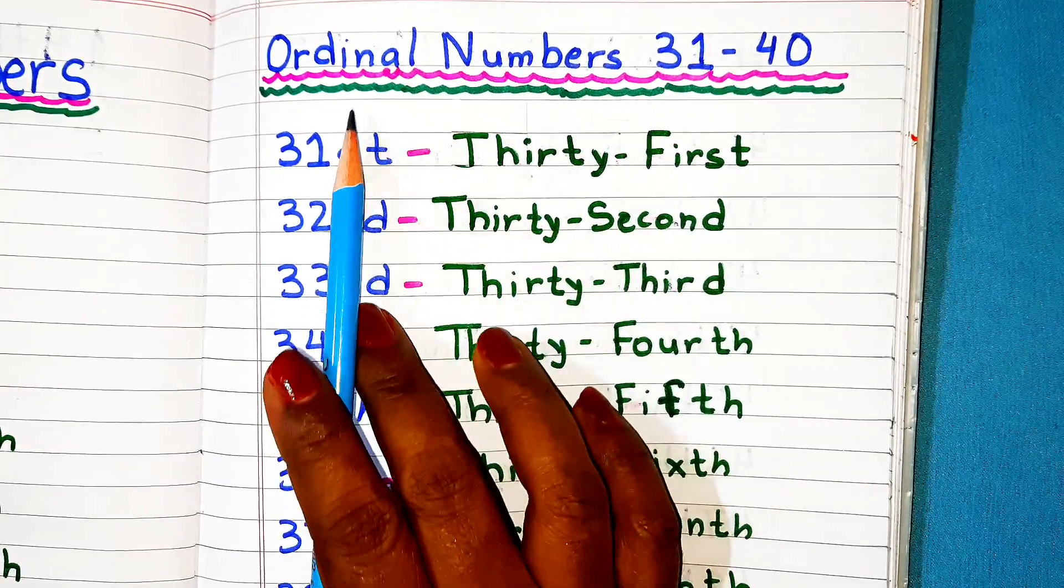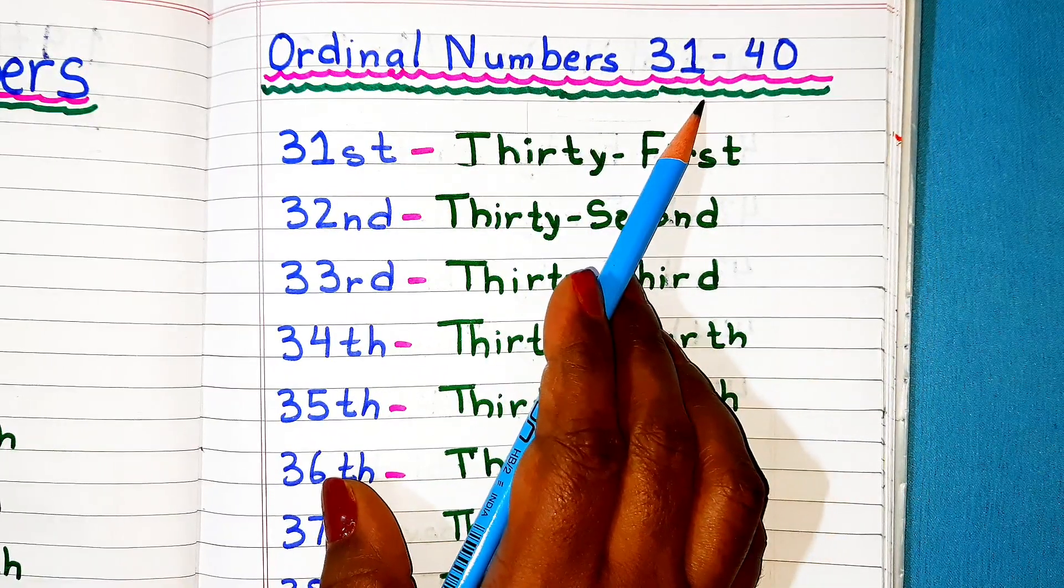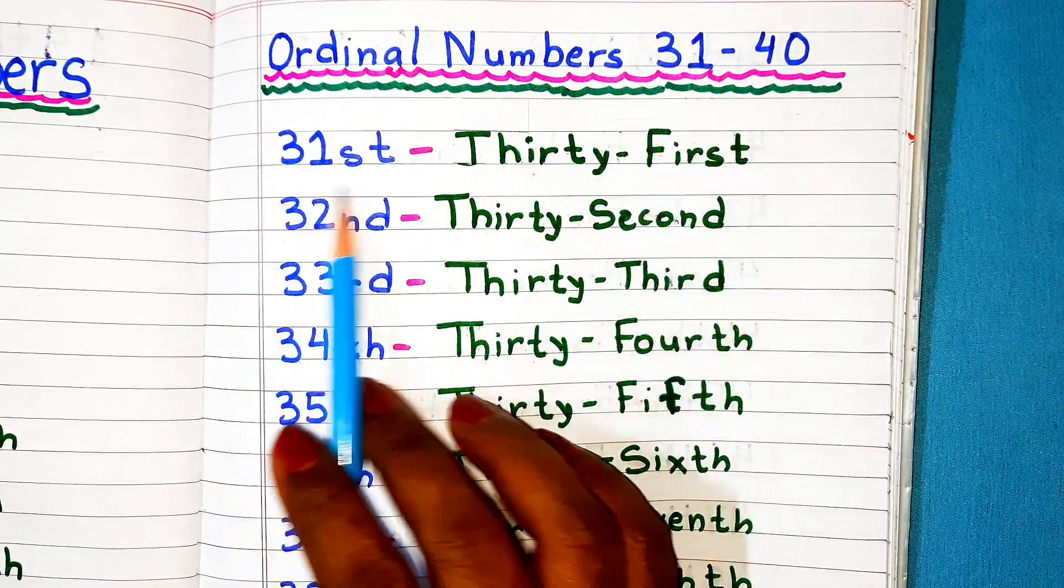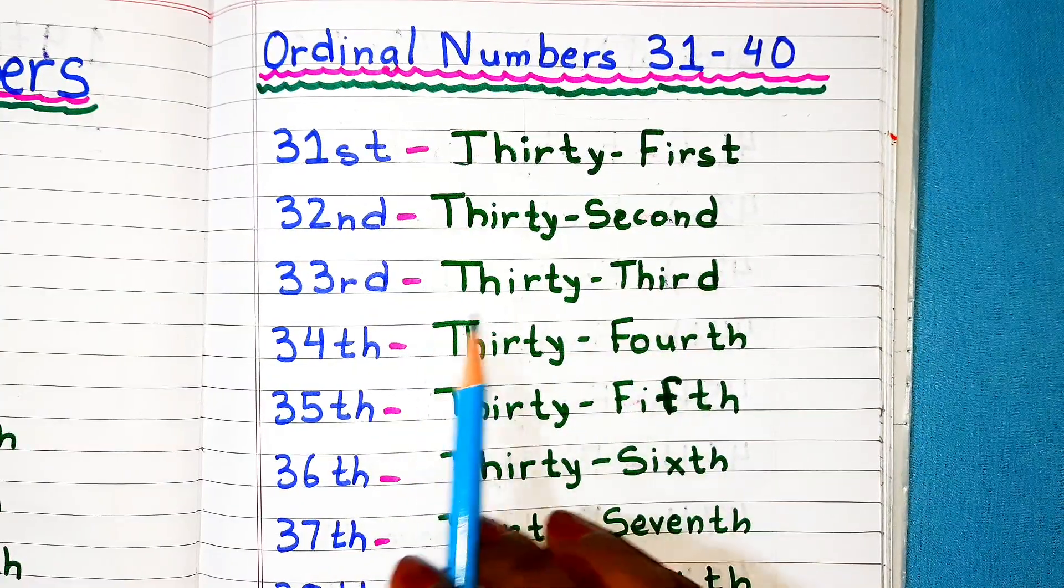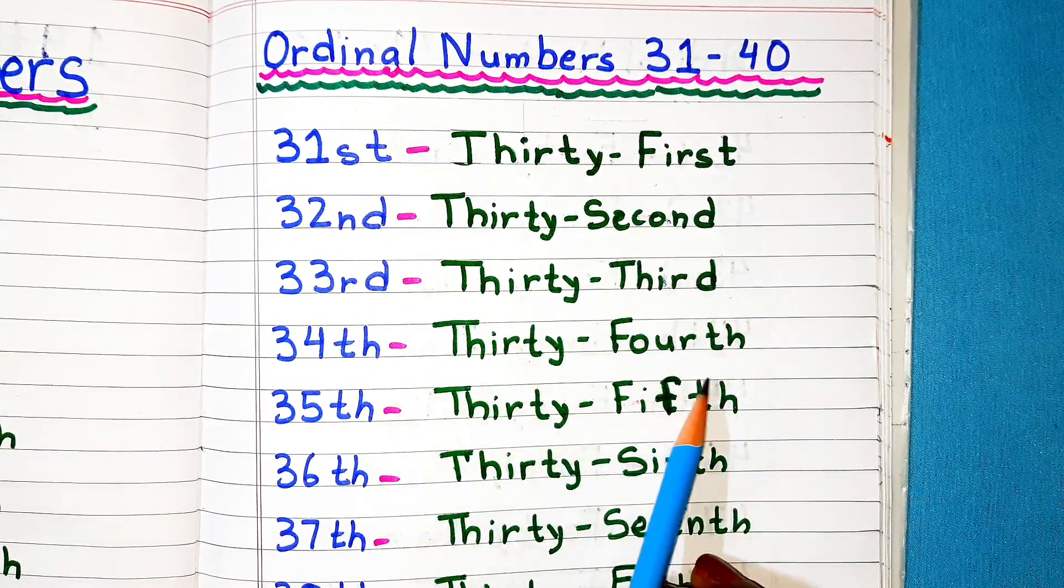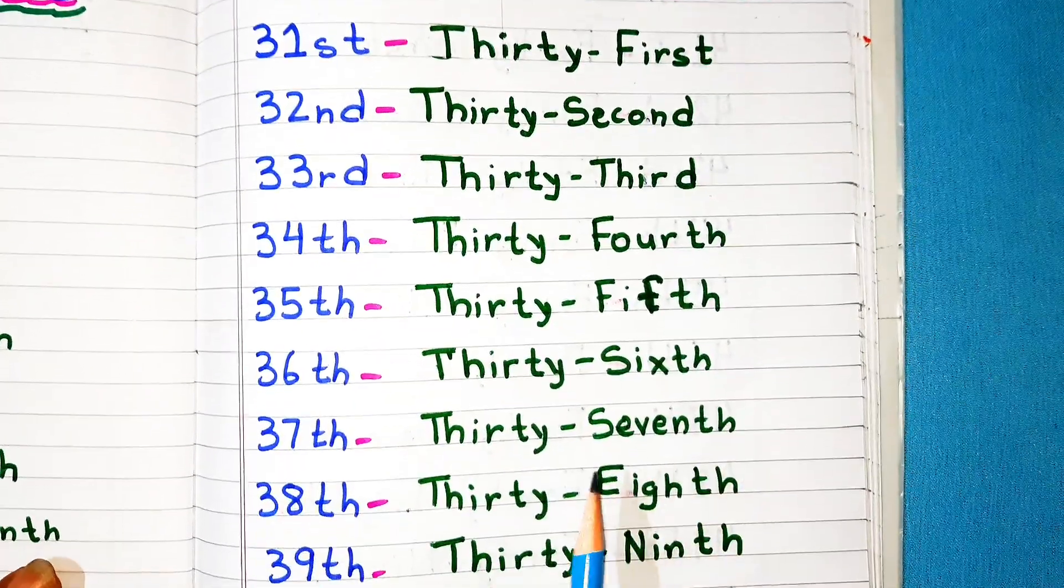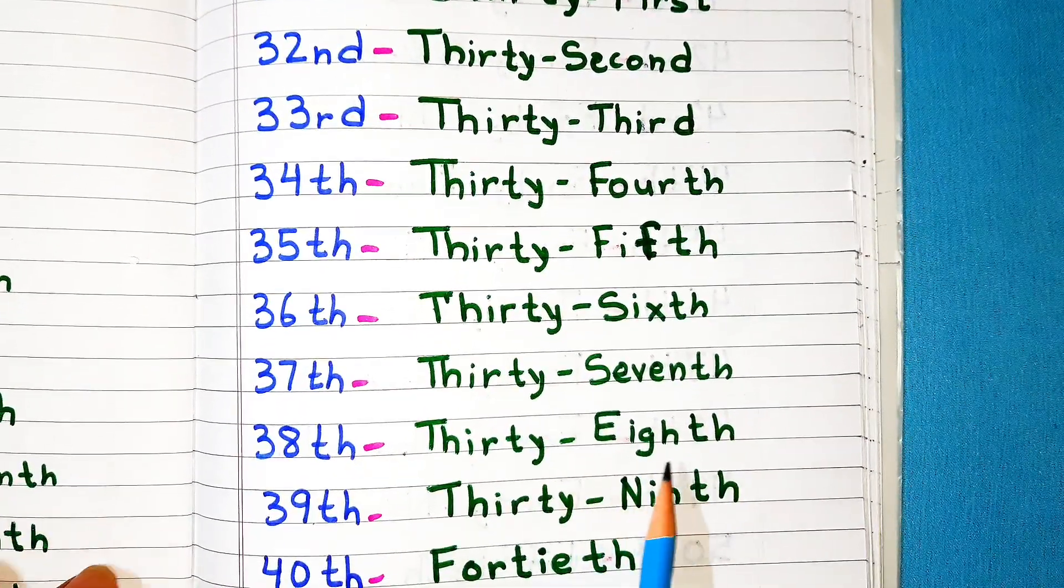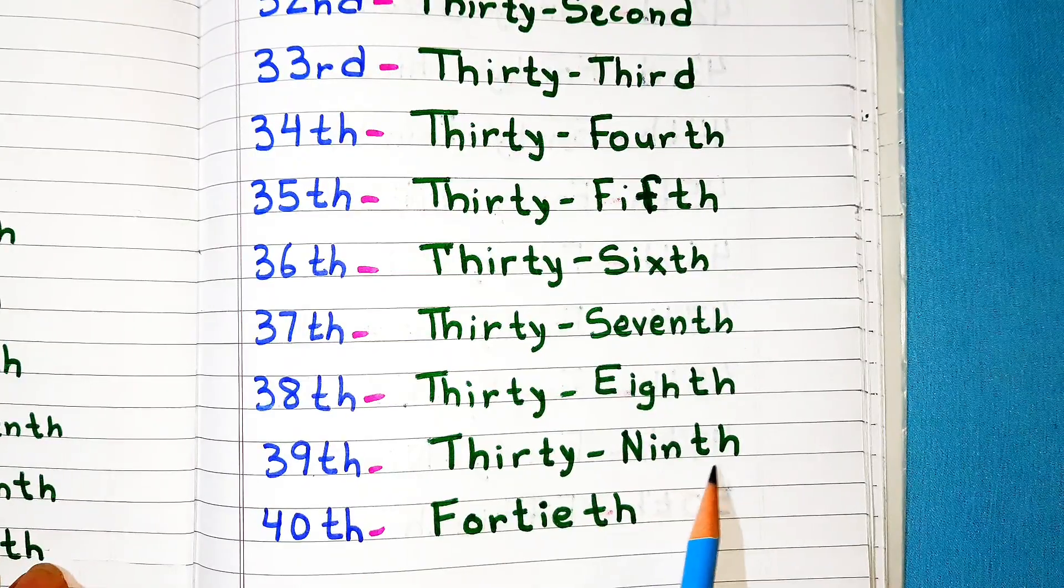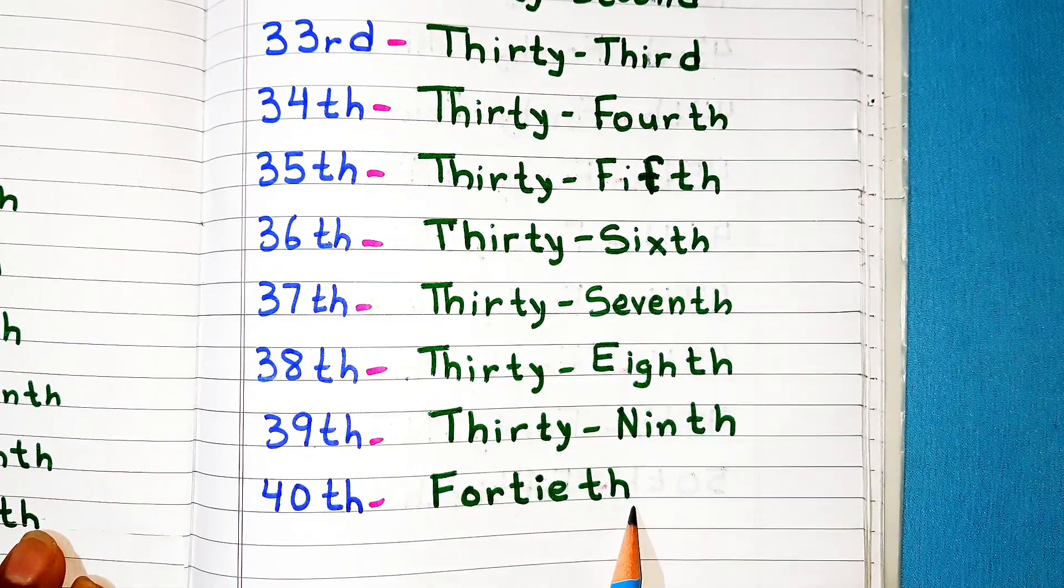Ordinal numbers 31 to 40: 31st, 32nd, 33rd, 34th, 35th, 36th, 37th, 38th, 39th, 40th.